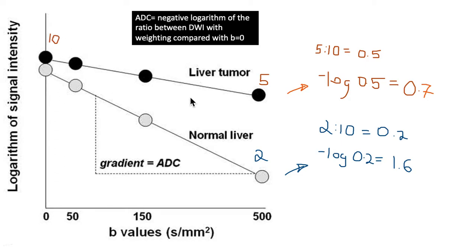We get a decrease in signal, and if we compute the negative logarithm of that ratio, we'll get 0.7.